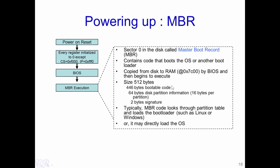The MBR is 512 bytes in total: 446 bytes are instructions containing bootable code about how to boot the system, 64 bytes contain information about the various partitions on the disk (16 bytes per partition), and 2 bytes form a signature used to identify this as valid MBR code. This code executes from location 0x7C00 in RAM. It looks into the partition table and attempts to boot the operating system.